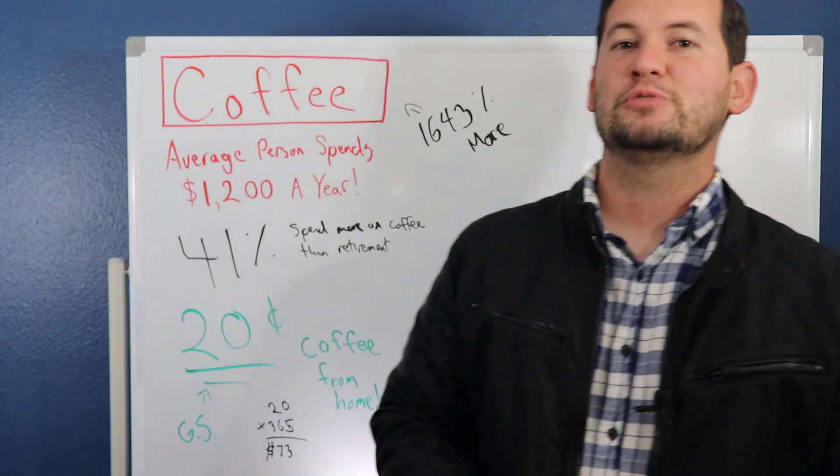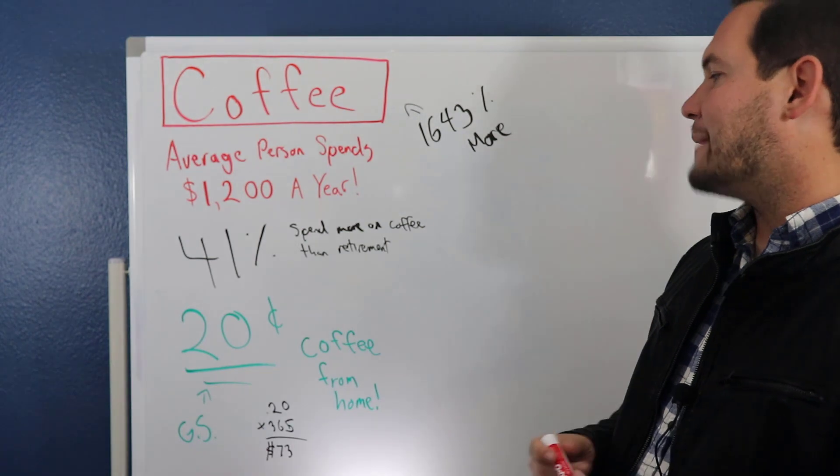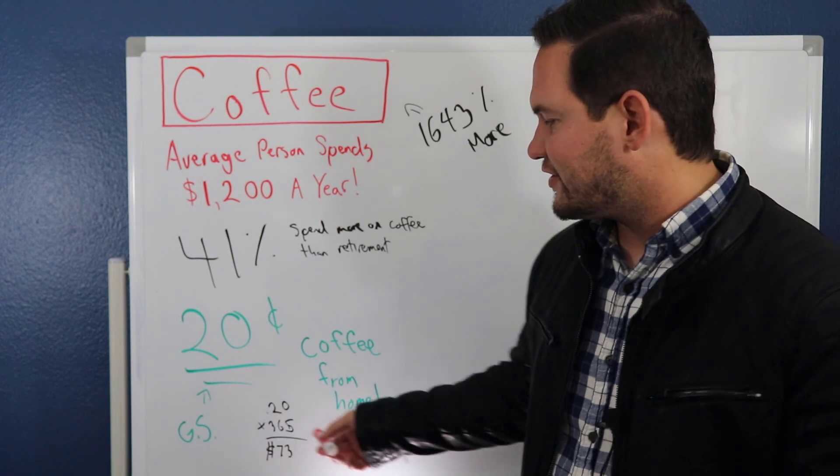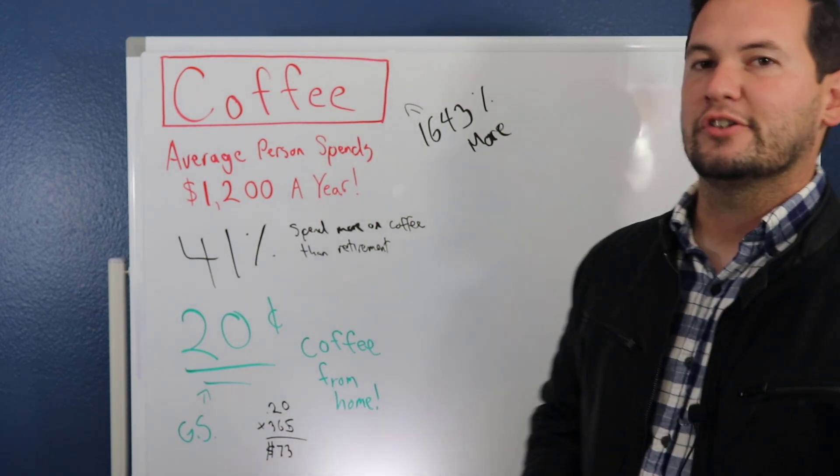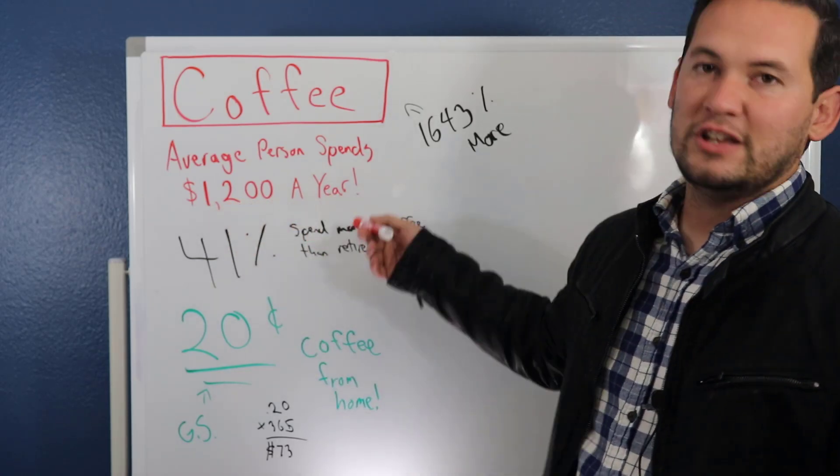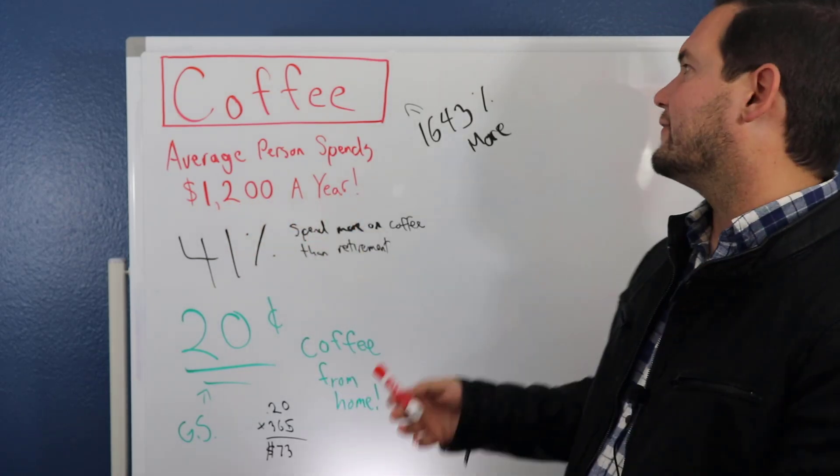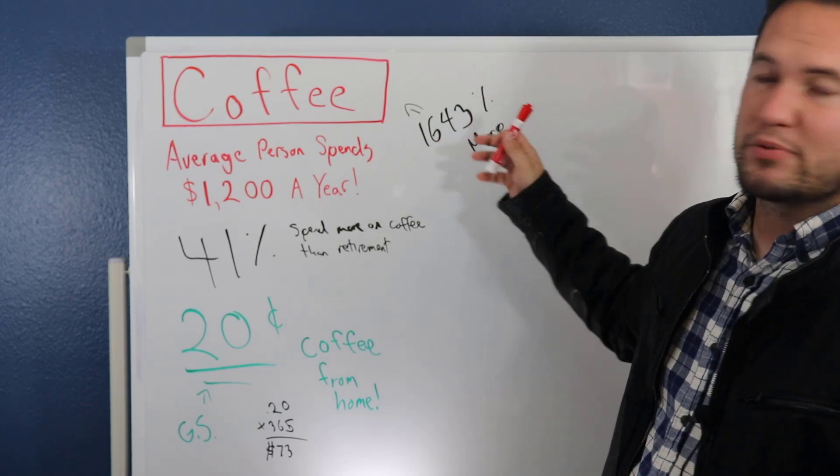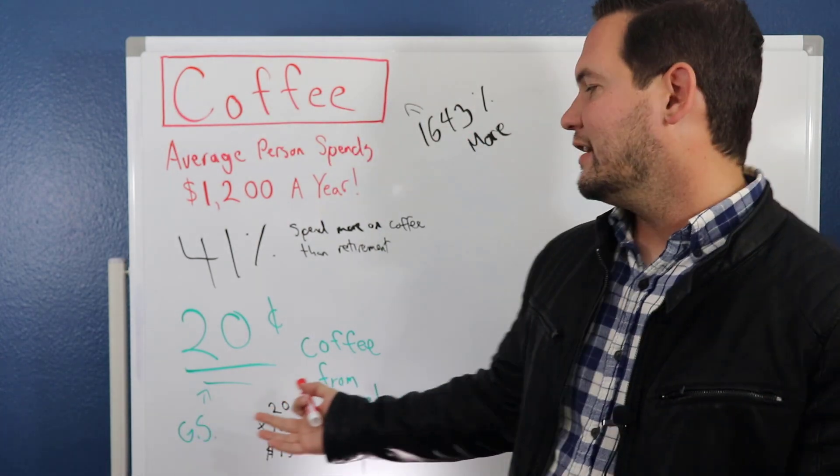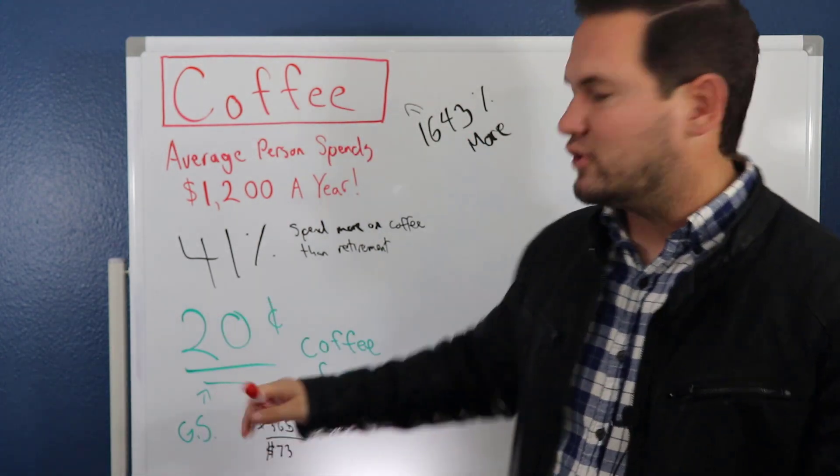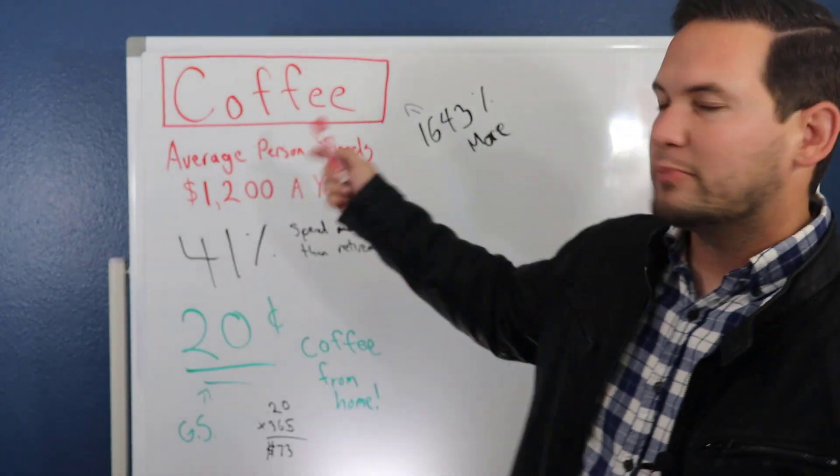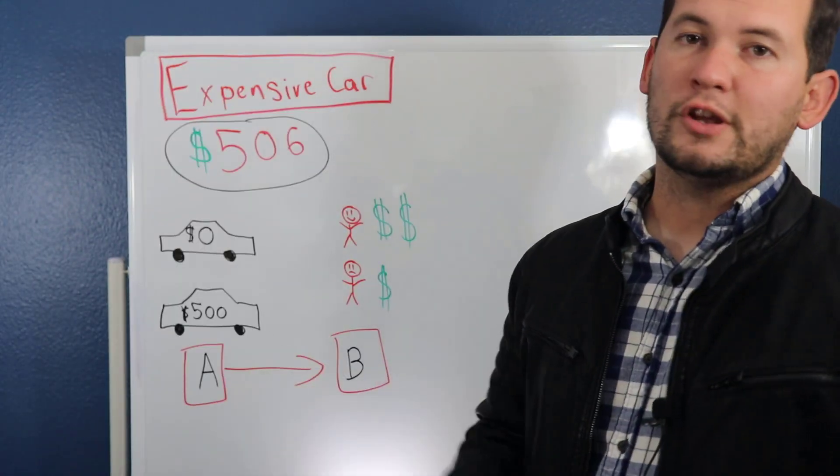If you were to make your 20 cent coffee every single day for 365 days, that would come out to a total of $73 if you have one coffee every single day, compared to the $1,200 a year that people are paying for Starbucks coffee. That's 1,643% more for the Starbucks coffee as opposed to the 20 cent coffee that you're making at home. If you made the coffee at home, you'd be saving over $1,000 a year. Please don't buy this incredibly expensive coffee.